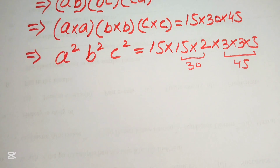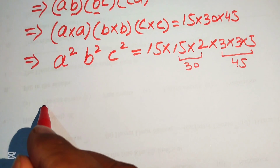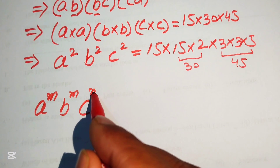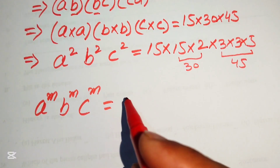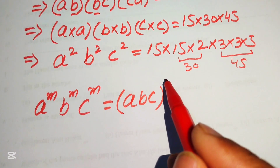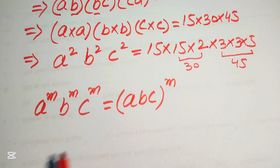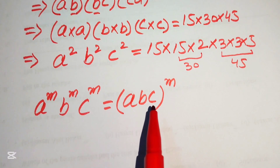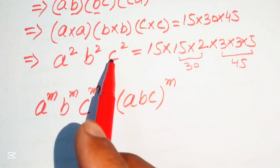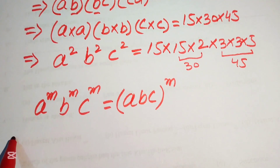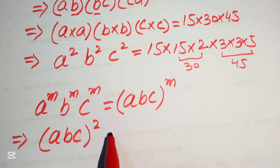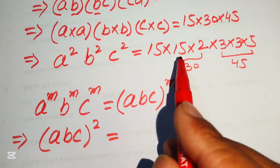We apply the exponent law: a^m × b^m × c^m = (abc)^m. Using this, the left hand side a²b²c² becomes (abc)². On the right hand side, we have 15² × 3² × 10.